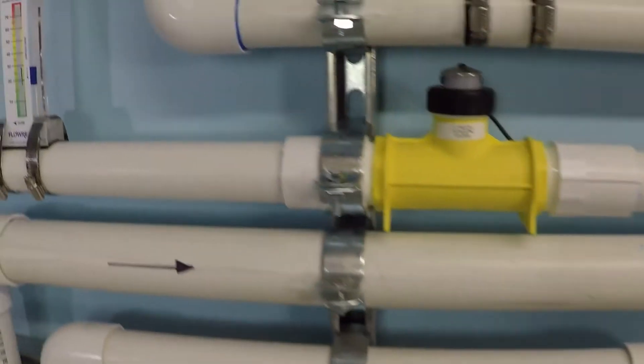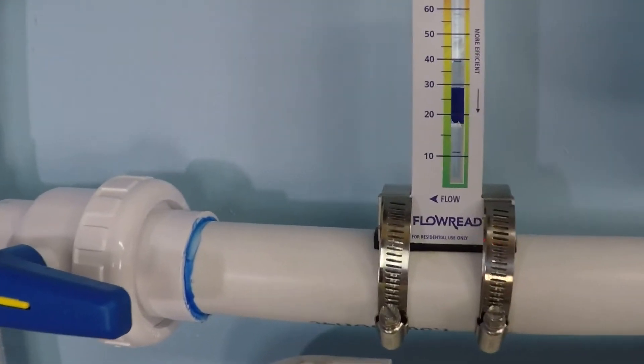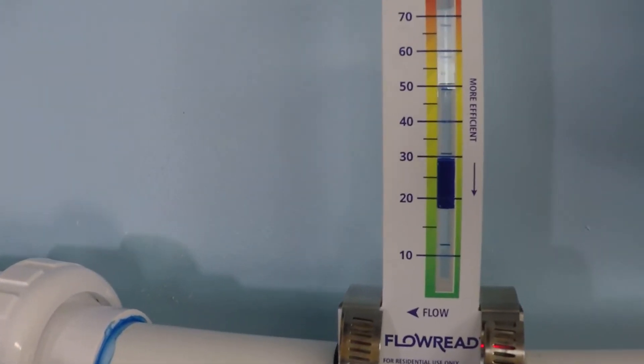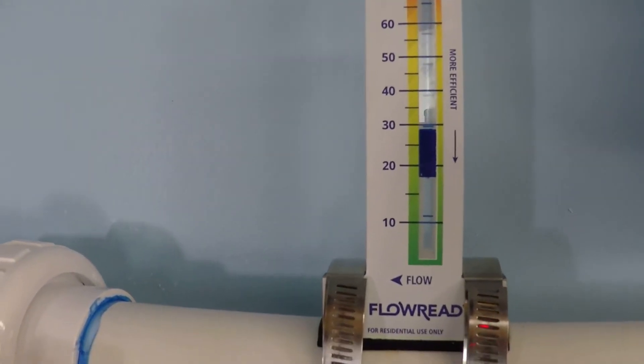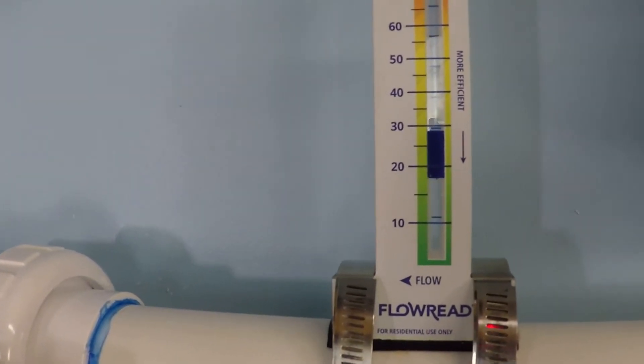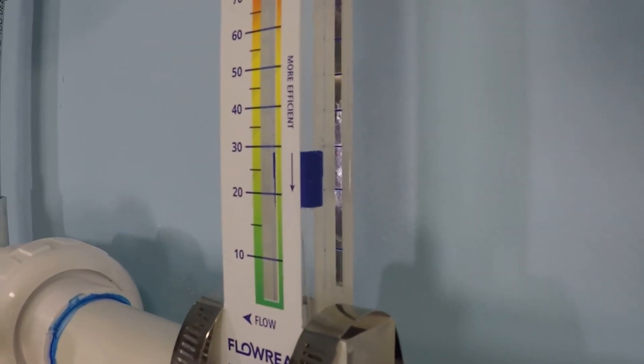Not everyone has a digital flow meter. These are much more common here. You would read it at the top of the float there. If I were reading that, I would read that at about 29 gallons per minute. That's what it would look like to me.